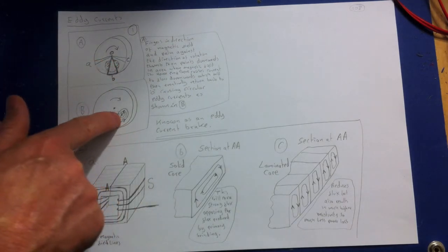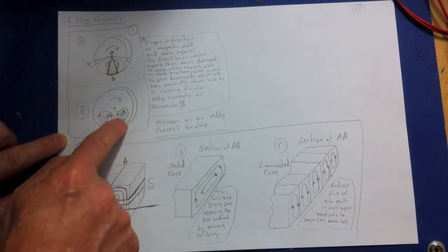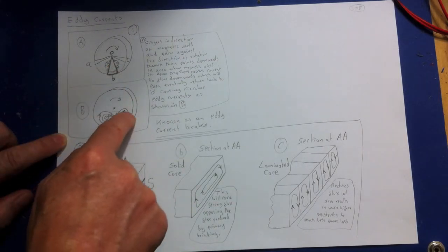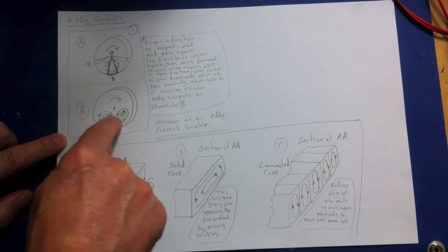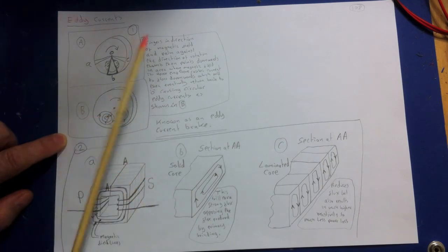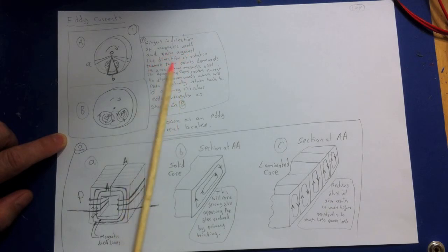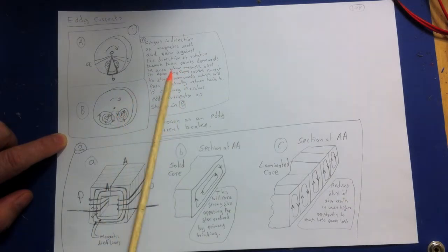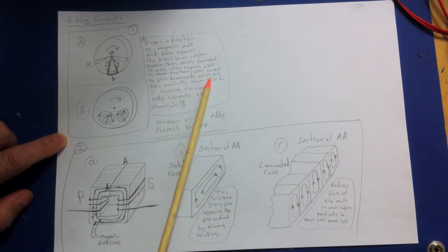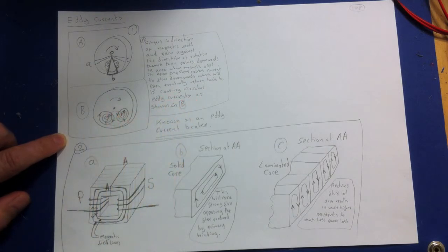And you can see here that that's the case. You're going down here. Now, as you come out of this area, these are going to swing round and cause these circles. So you get these circular eddy currents. I'll just repeat here: fingers in direction of magnetic field and palm against the direction of rotation. The thumb then points downwards in area where the magnetic field is. Hence, the EMF there causes current to flow downwards, which will then eventually return back to O, causing circular eddy currents. So that's what's happening there.